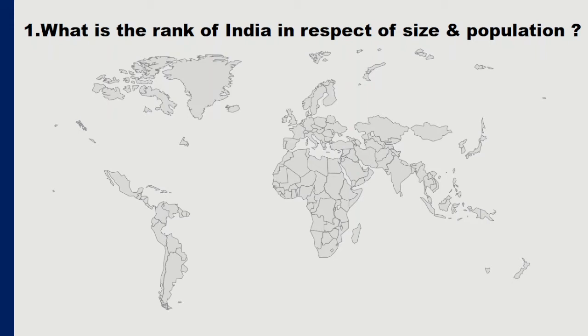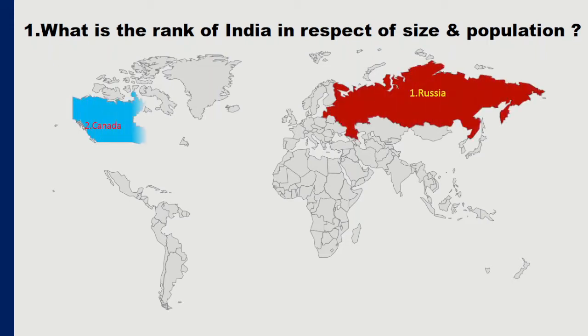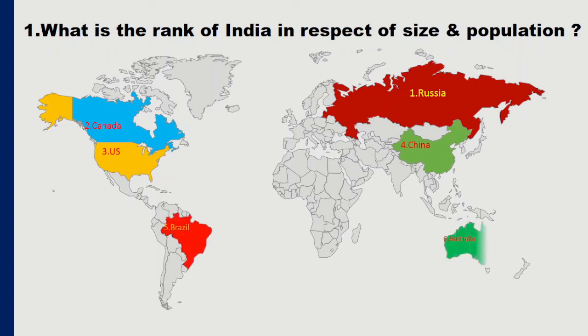First question: what is the rank of India in respect of size and population? Area-wise, the first ranked country in the world is Russia. Second is Canada, third is USA, fourth is China, fifth is Brazil, sixth is Australia, and our India is ranked 7th in the world area-wise. Not just TCS and TPS, but many other exams may ask what is the rank of Brazil in respect of size, so you have to learn all of these names.